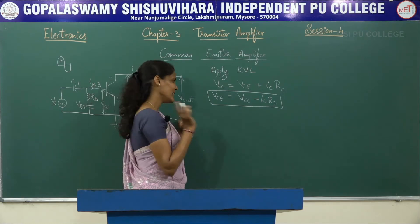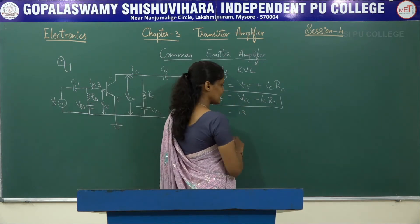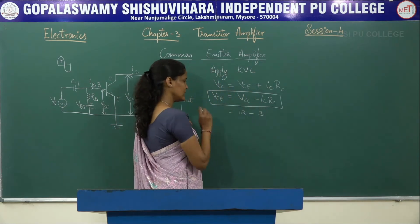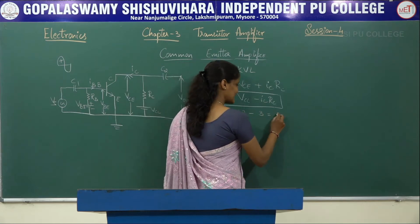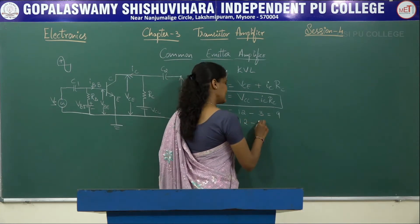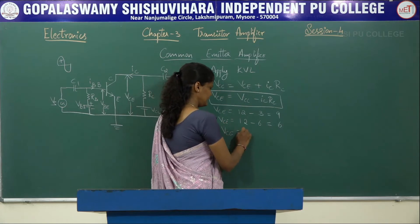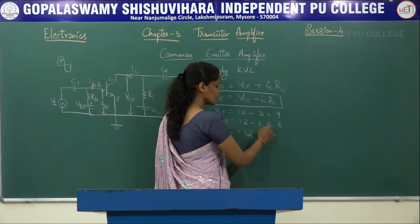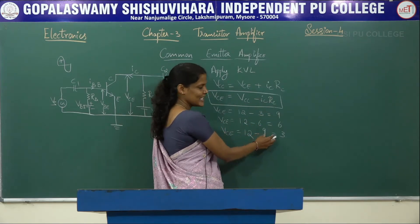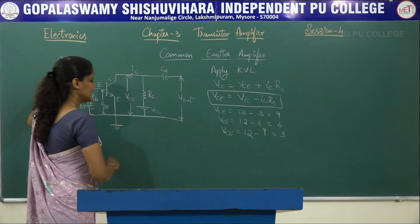Let us understand this with an example. Suppose Vcc = 12 V (constant). Initially, Ic·Rc = 3 V, so Vce = 12 − 3 = 9 V. Second example: Ic·Rc increases to 6 V, so Vce reduces to 6 V. Third example: Ic·Rc increases to 9 V, so Vce reduces to 3 V. As Ic·Rc increases, Vce decreases — meaning for the positive half cycle at the input, the output voltage decreases and appears below the zero axis line.